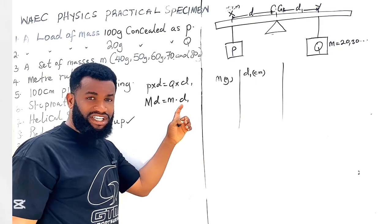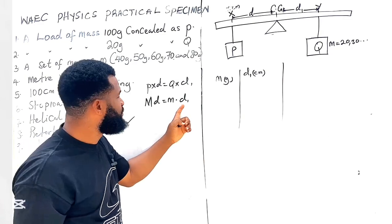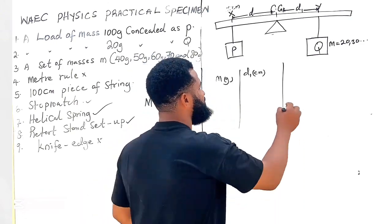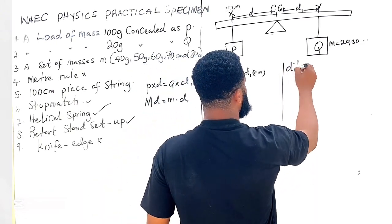The question is going to be, this is the formula for moment, right? Moment is the mass or the force times the distance, right, perpendicular distance from the turning point to the line of action. Now what WAEC will ask you to do is to find d inverse, d inverse.